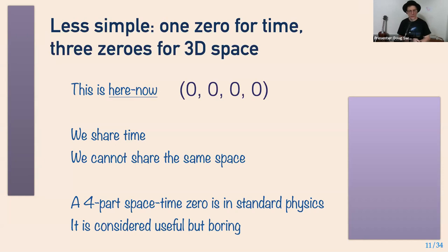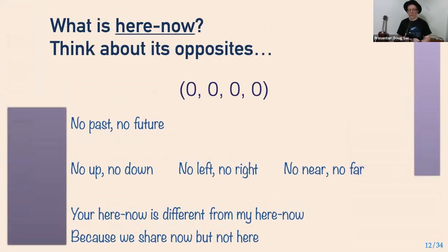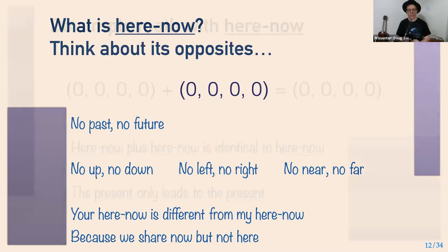Okay. So this four part way of drilling with space time zeros is in standard physics and it is considered both useful and boring. So let's think a little bit more carefully about here-now using a favorite technique of artists, which is to say, yeah, but what's not there? What's not there is the past. What's not there is the future. What's not there is up. What's not there is down. What's not there is left. What's not there is right. And there's no near and there's no far. So your here-now is different from my here-now because we share the same now, but we don't share the same here.